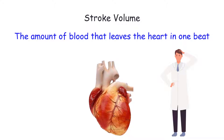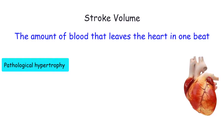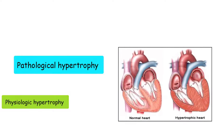The answer lies in the fact that there is more than one way for the heart to grow. The heart can grow from pathological hypertrophy or physiologic hypertrophy. Pathological hypertrophy can be the result of a thickening of the wall of the heart. This thickening can be so great that it is difficult for the heart to contract or for the heart cells to receive adequate oxygen, leading to poor circulation and the death of heart cells.